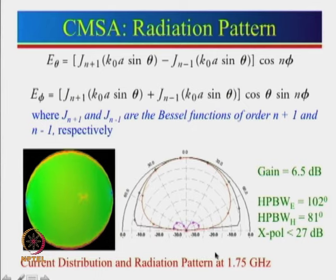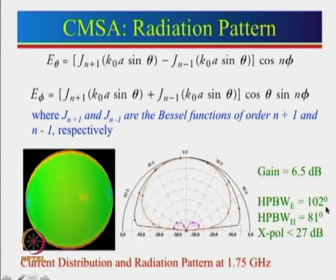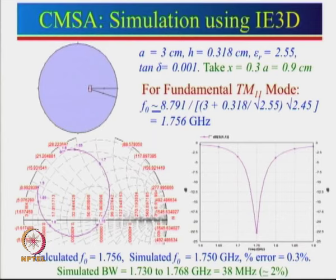The radiation pattern of the circular microstrip antenna at 1.75 GHz looks very similar to that of a rectangular microstrip antenna, even though the rectangular patch has no Bessel functions. The E-plane half-power beamwidth is 102°, H-plane is 81°, and cross-polar level is very small at about −27 dB.